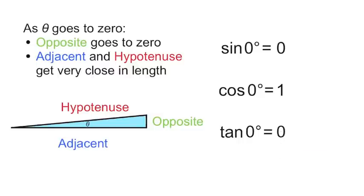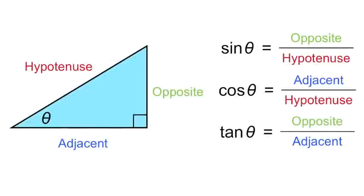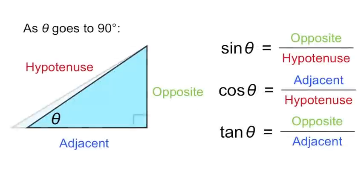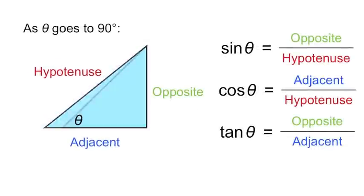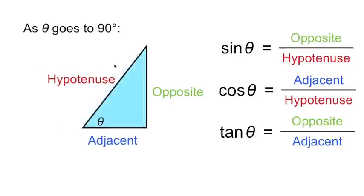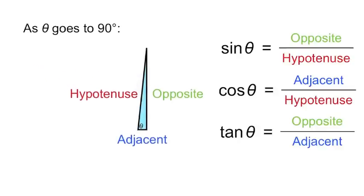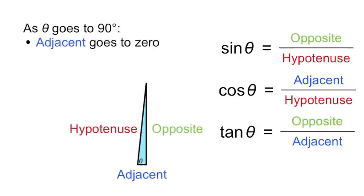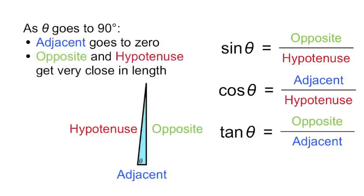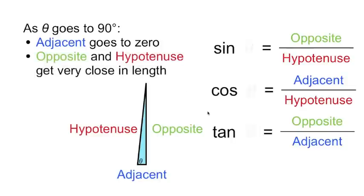Now let's return to our original right triangle and see what happens as theta goes to 90 degrees. This time, it's the adjacent that gets very small, and the opposite and the hypotenuse are getting very close in length. So let's use this information to find the sine, cosine, and tangent of 90 degrees.